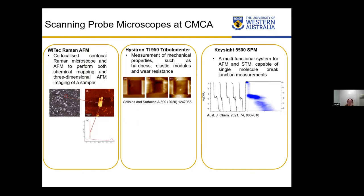We also have the Hysitron TI-950 triboindenter. This instrument can be used to measure mechanical properties such as hardness, elastic modulus, and wear resistance of a variety of samples. For example, here are the wear images of a series of polymer films. We can measure the wear depths of these films and identify which film is better to resist wear. This instrument is very useful for materials study as well.